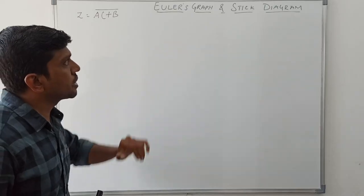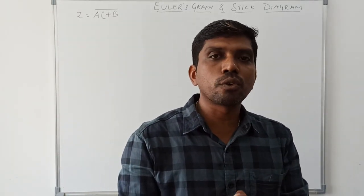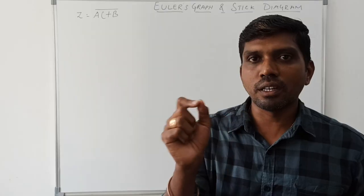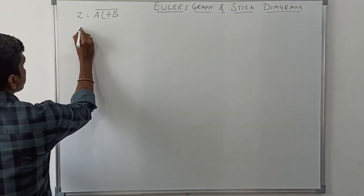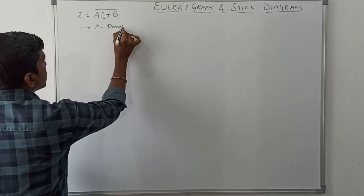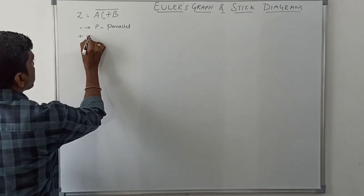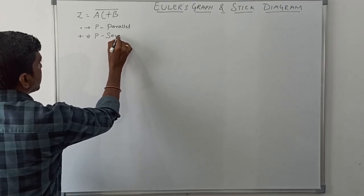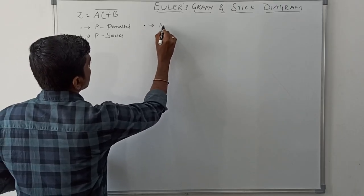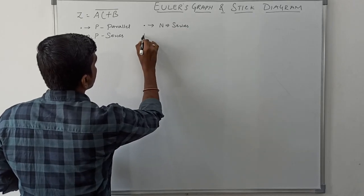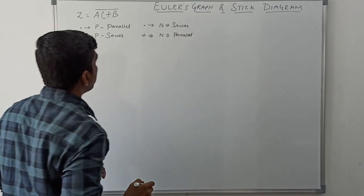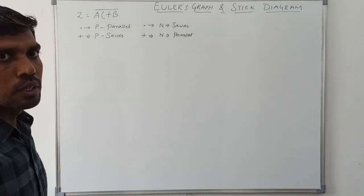Before drawing the Euler's graph and stick diagram, first you convert the CMOS logic circuit for the corresponding boolean expression. In this boolean expression there are two operators: dot and plus. The rule is: dot operator present in the boolean expression means PMOS transistors connecting in parallel; plus operator means PMOS transistors connecting in series. In NMOS, dot means connecting in series and plus means connecting in parallel.